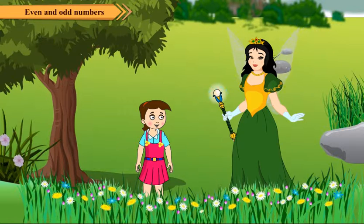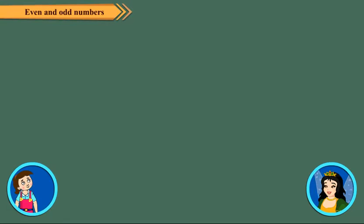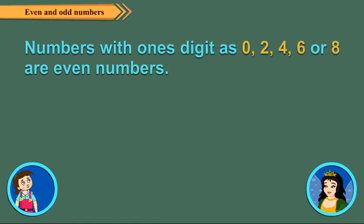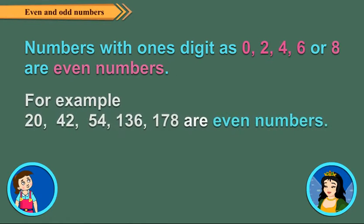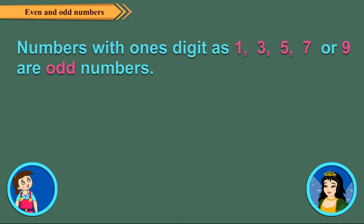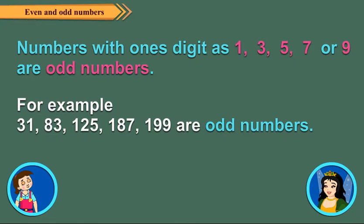No, Neha, you can tell quickly whether a number is even or odd. To do so, just see its ones digit. If it is 0, 2, 4, 6 or 8, then the number is even. And if the ones digit is 1, 3, 5, 7 or 9, the number is odd.